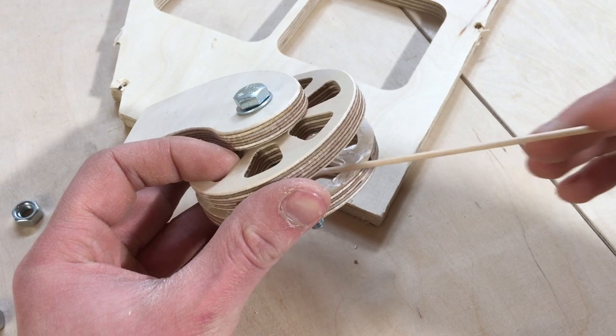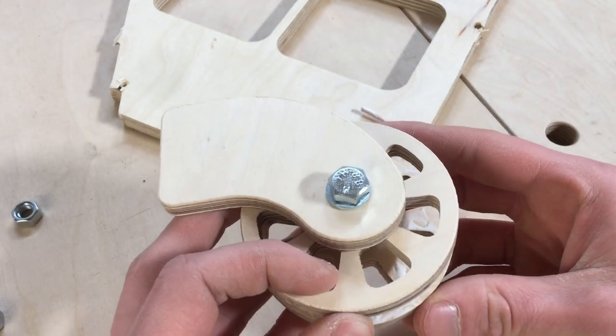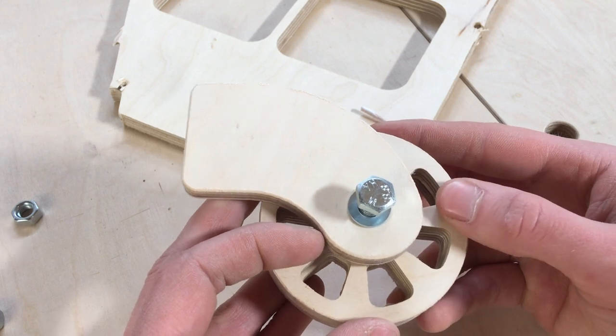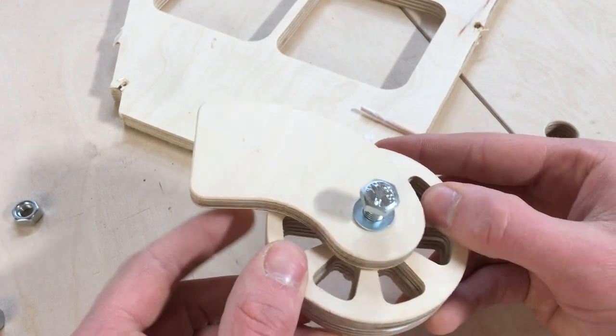I decided to glue the wheel components together. I probably could have done it before attaching the bearing to the axis. This would be way easier and faster.